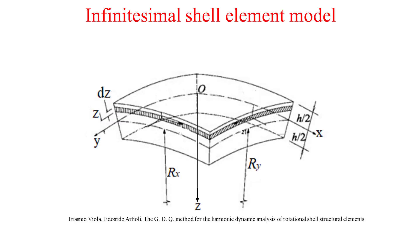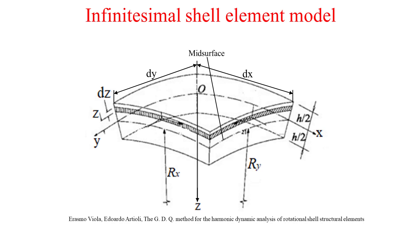Let's consider an infinitesimal shell element model like it is depicted by the figure that you see now in this slide. Infinitesimal means that this shell element is considered infinitely small with its dimension dx along x and dy along y. This shell element is represented by its mid surface located at the half thickness. It has two curvatures: the curvature along x characterized by its radius of curvature denoted by Rx, and its curvature along y characterized by its radius of curvature denoted by Ry.